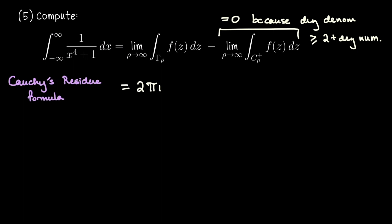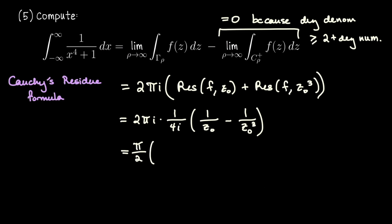So this will be 2 pi i times the sum of the residues that we computed. So that's going to be 2 pi i times let me pull out the 1 over 4i that each of the residues had so that's 1 over 4i. And then that leaves us with adding together 1 over z naught minus 1 over z naught cubed. The second one was negative.